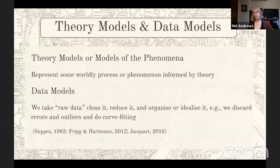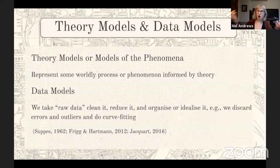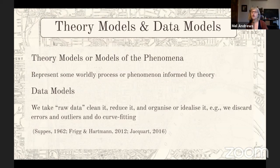There's also a distinction in the literature between theoretical models and data models. A theoretical model represents a worldly process or phenomenon and is informed by theory — it's conceptual. Data models, on the other hand, are when we take raw data we've collected, clean it up, remove outlier variables, remove errors, and find a rough first pathway to organize it. That's what a data model is — we do cleaning and processing.